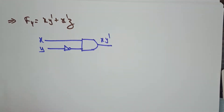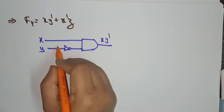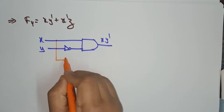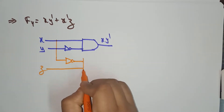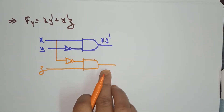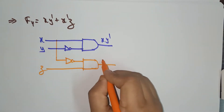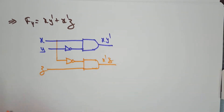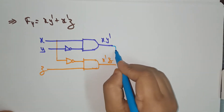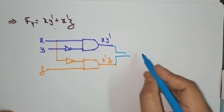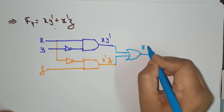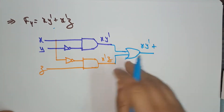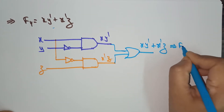The output of the first AND gate is xy'. Then for the second AND gate, we take x' (complement of x) and z (a new variable), giving output x'z. These two outputs are then connected to an OR gate — because of the '+' — giving the final result: F4 = xy' + x'z.